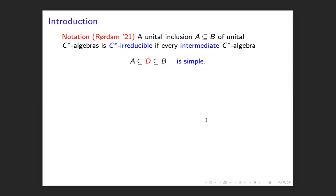It's about C*-irreducible inclusions of unital C*-algebras. This notation was introduced by Michael this year. He says that a unital inclusion of two unital C*-algebras — always a unital inclusion, mapping the unit of A to the unit of B — is C*-irreducible if every intermediate C*-algebra D sitting between A and B is also simple. Then A and B have to be simple C*-algebras.